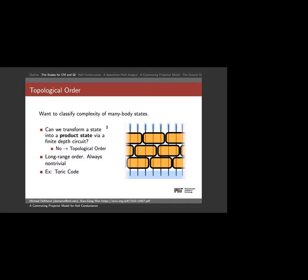In classifying many-body states, the first question is: is the state a product state? Can I just tensor up lots of individual systems with no entanglement? More precisely, up to a finite depth circuit, is this state deformable into a product state? If it's not, that's because there's really long-range entanglement between something here and something arbitrarily far away — and that's what we call in condensed matter topological order.